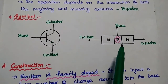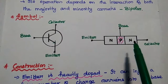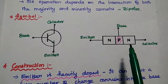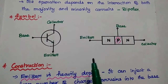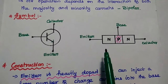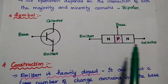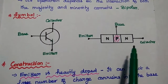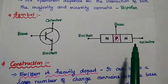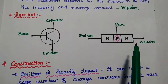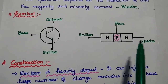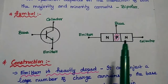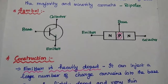A large number of majority carriers are injected into this base. The next layer is base layer. It is lightly doped and a very thin layer so that it can pass most of the injected carriers from this emitter to this collector. It is very thin when compared with the N layers. The last one is the collector terminal. This layer is moderately doped so that it can collect all the injected carriers for its current conduction.